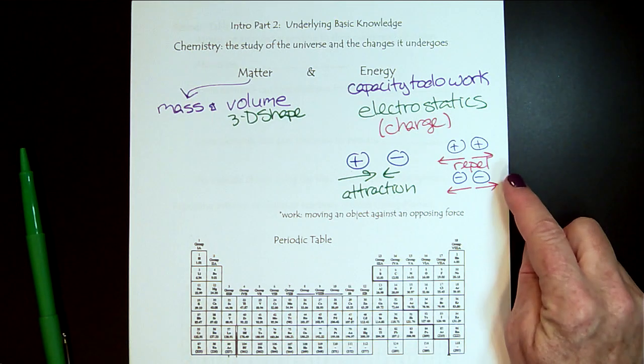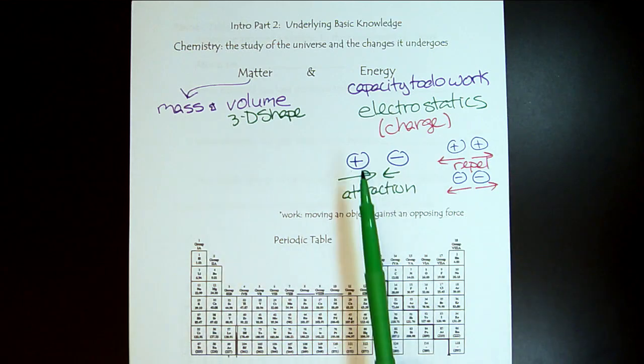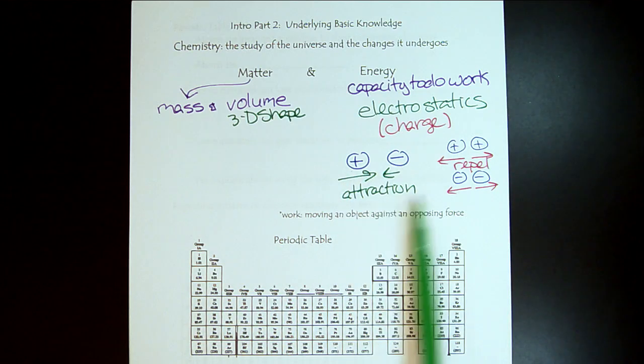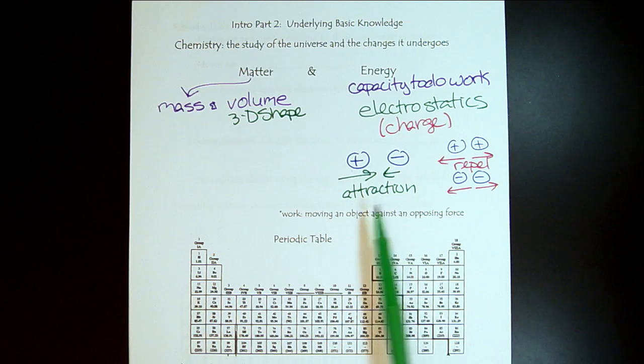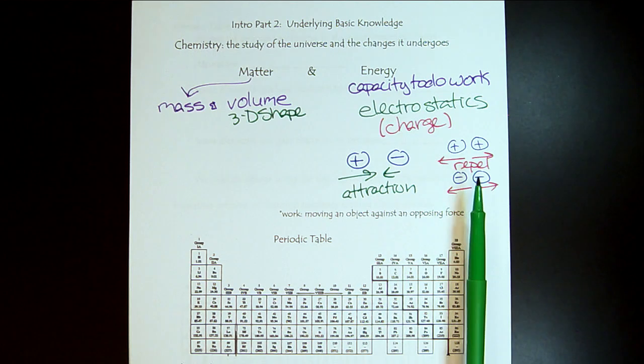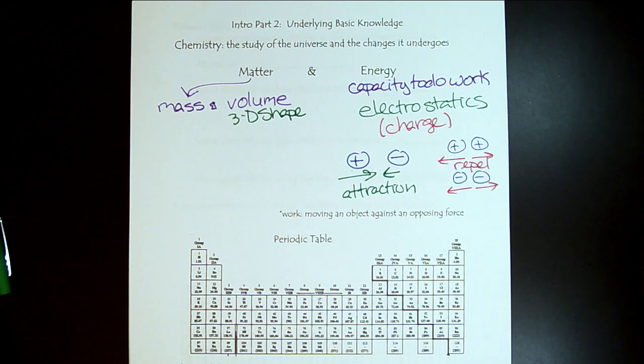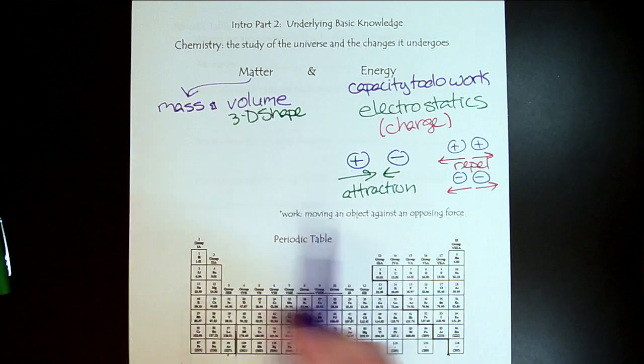You want to start memorizing your ions because whether it's a positive ion or a negative ion, that's going to determine whether things are attracted or repelled. So get started on those ions.